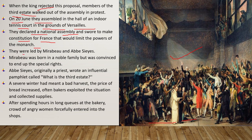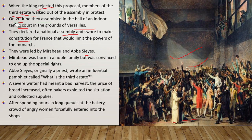They were led by Mirabeau and Abbé Sieyès. Mirabeau was born in a noble family but was convinced of the need to end the social privileges of the nobility. Abbé Sieyès, originally a priest, wrote an influential pamphlet called 'What is the Third Estate?'